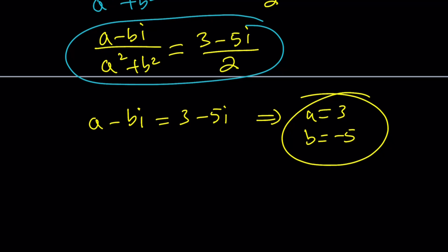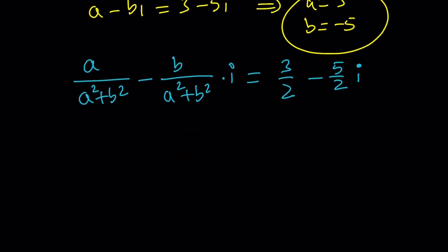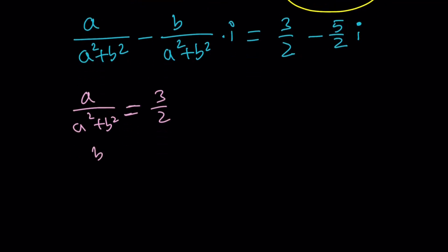Separate the real and imaginary parts. So if you do it on the left hand side you're going to get A over A squared plus B squared, and then on the imaginary part it's going to be negative B over A squared plus B squared times I, which equals 3 halves minus 5 halves I. Now we can go ahead and set the real parts equal to real parts and imaginary parts equal to imaginary parts. So A over A squared plus B squared equals 3 halves, and B over A squared plus B squared equals 5 halves.